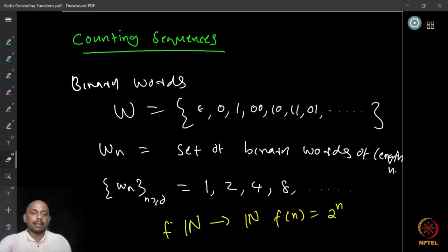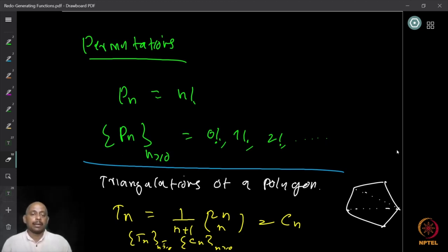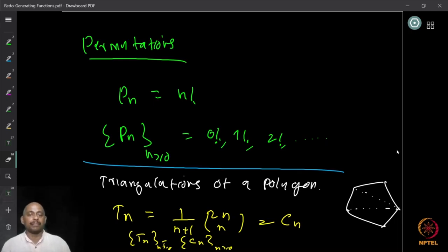We can look at other examples: the number of permutations is n factorial for an n-element set, so the sequence P_n is zero factorial, one factorial, two factorial, etc. Similarly, the sequence T_n counts the triangulations of a polygon with n sides, and we know that it is the Catalan number, so T_n = C_n = (1/(n+1)) * C(2n, n).